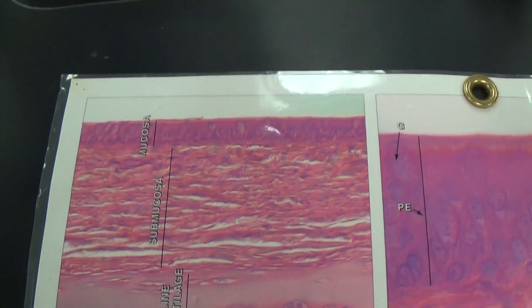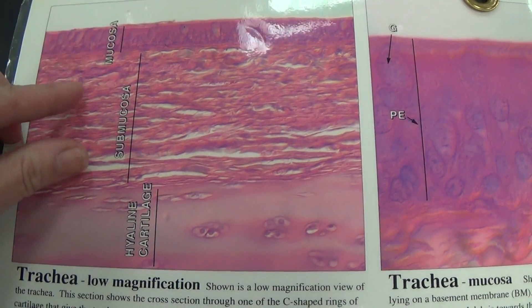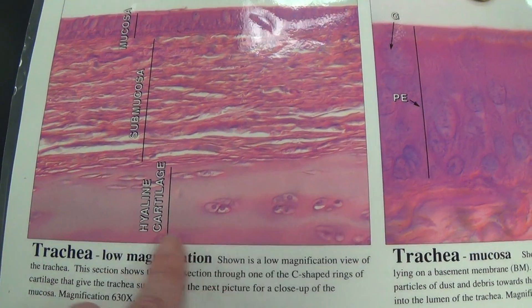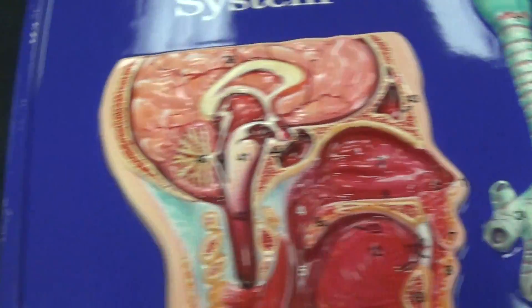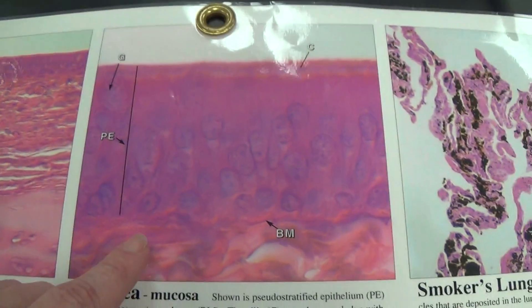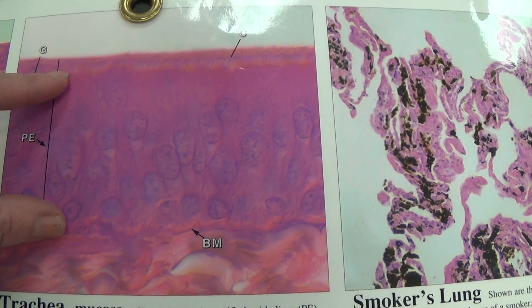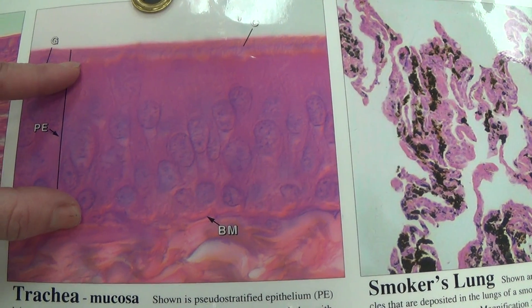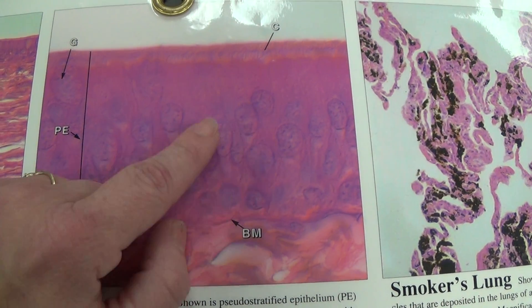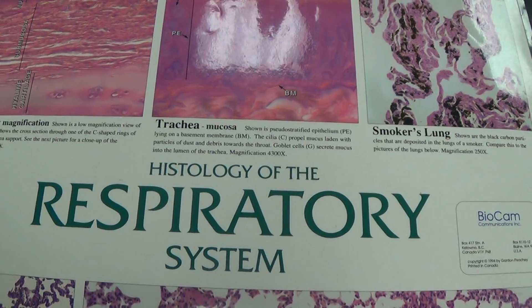One more thing to point out: this is a cross-section of the trachea at low power. We've got three different layers here. The bottom layer has the hyaline cartilage, which makes up the cartilage rings we see on this model. On the surface layer, called the mucosa, we have cilia on top, and this is pseudostratified columnar epithelial tissue — it looks like you have more than one nucleus per cell, but you do not. That concludes the respiratory system.